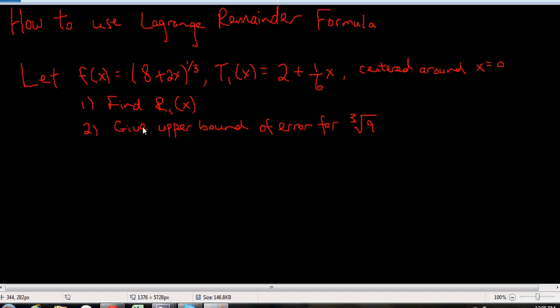So in this one, we're going to find what R1(x) is, and the R1(x) is based off of this T1(x). And again, we're going to give the upper bound of the error, so that's R1(x), the error, for the third root of 9, using T1 at a half. Let's just do number 1 first. So number 1 is find R1(x).